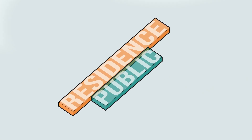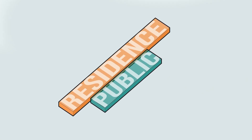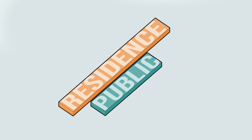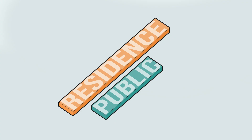The building is separated into two components: the residence and the public spaces. The connecting point represents a threshold and offers views and access to a garden. It is an opportunity to pause, reflect, and appreciate the in-between.